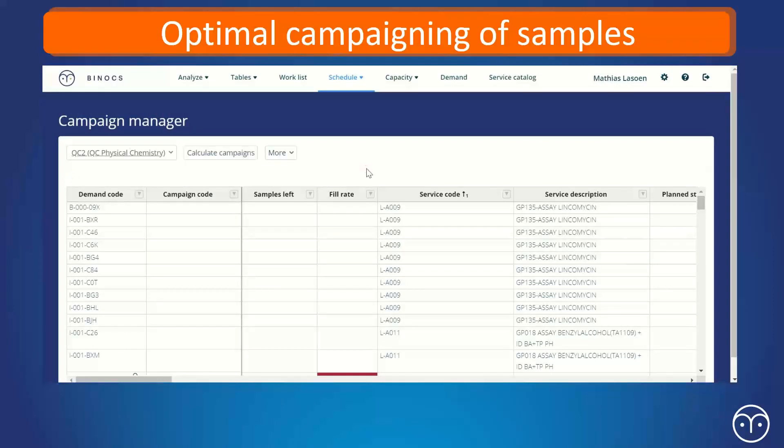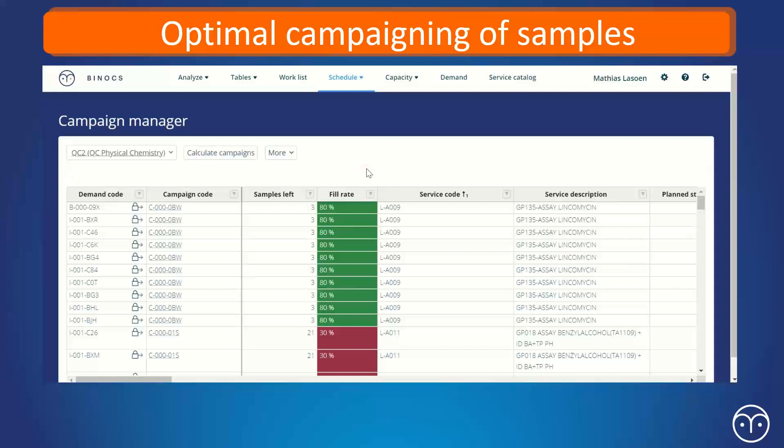We've got the campaign manager. So it was another part of the automation. So, based on our campaigning rules that we've set up, at the click of a button, we can create our campaigns. So obviously driving efficiency through getting more samples into a run. And this is obviously an important driver of productivity and the improvements that we're seeing.